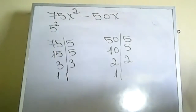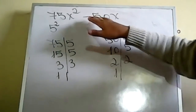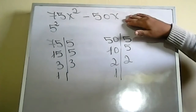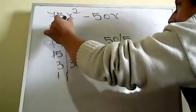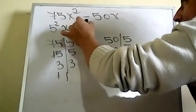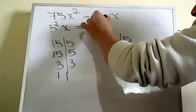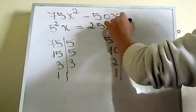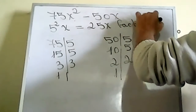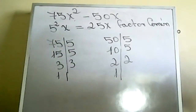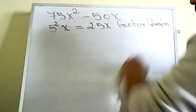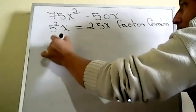¿Qué más nos dice con respecto al ejercicio que mencionó la señorita? Con respecto a la variable, siempre va a poseer la variable de menor exponente. En este caso, ¿cuál sería? X elevado a la primera. Entonces, el factor común es igual a 25x.